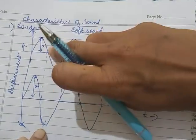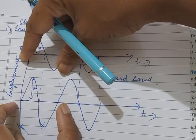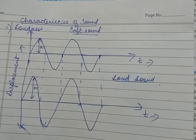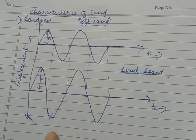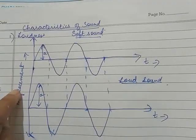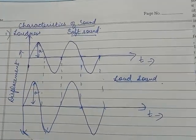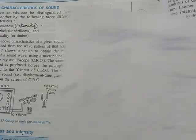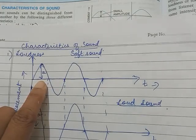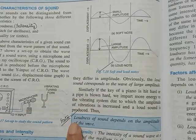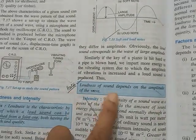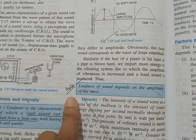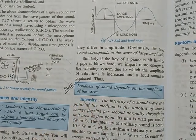I put these dotted lines to make sure that the frequency is the same - the length of the wave should not change. So our conclusion: loudness depends on amplitude. Factor affecting loudness: loudness of sound depends on the amplitude of the wave.